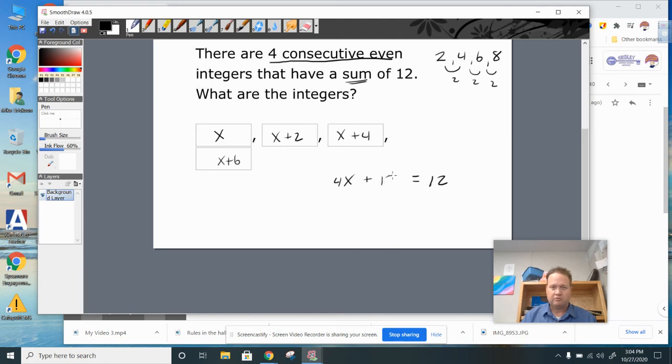So 4x plus 12 equals 12. And if I solve this, let's take away the 12, and you're going to get 4x equals 0. Well, there's no way around that. When you multiply by one-fourth, you're going to get 0.